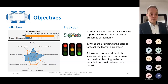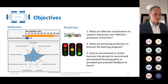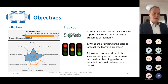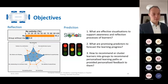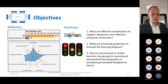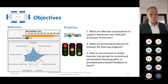Key questions for your own projects include: what are effective visualizations to support awareness or reflection? What are promising predictors to forecast learning progress? Prediction is a delicate thing — there is a lot of discussion on biases. How can we cluster learners into groups and recommend personalized learning paths? We have done exercises where AI identifies different types of learners who then receive different types of feedback, though personalization happens at group level rather than purely individual.